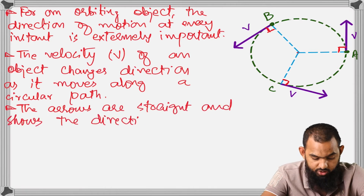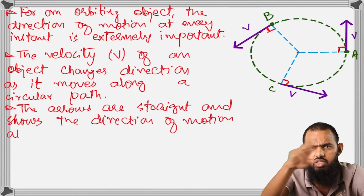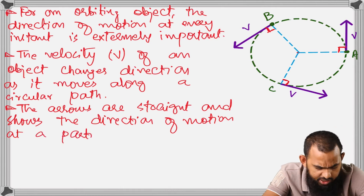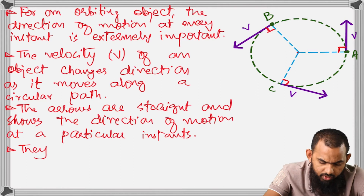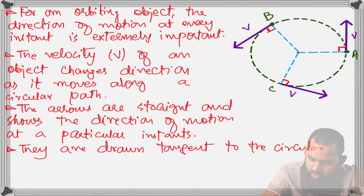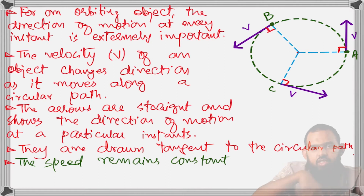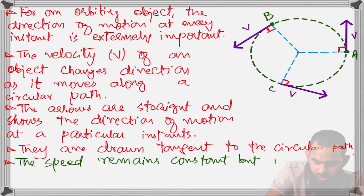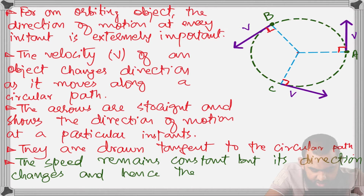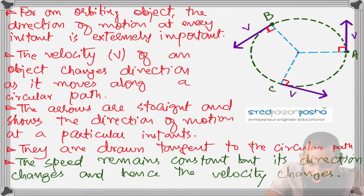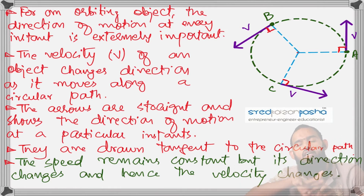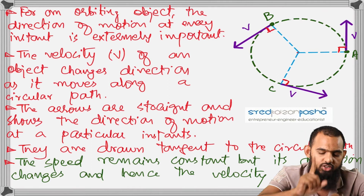The velocity arrows are drawn tangent to the circular path, showing the direction of motion at each instant. So at every point the velocity direction is tangential. The speed remains constant — say 20 or 30 meters per second — but the direction keeps changing, so the velocity changes continuously throughout the circular motion.